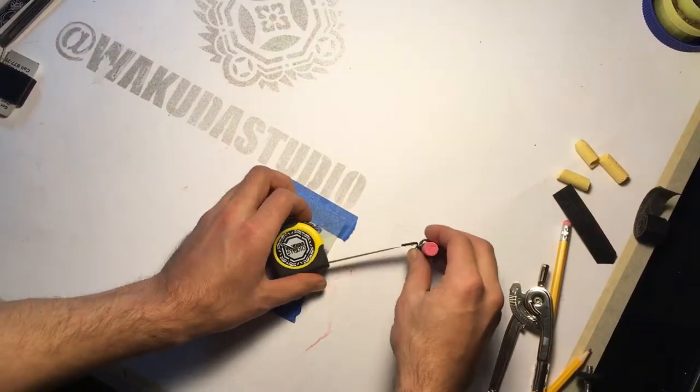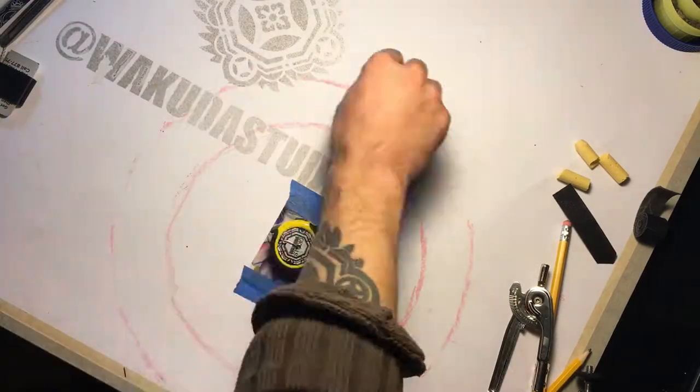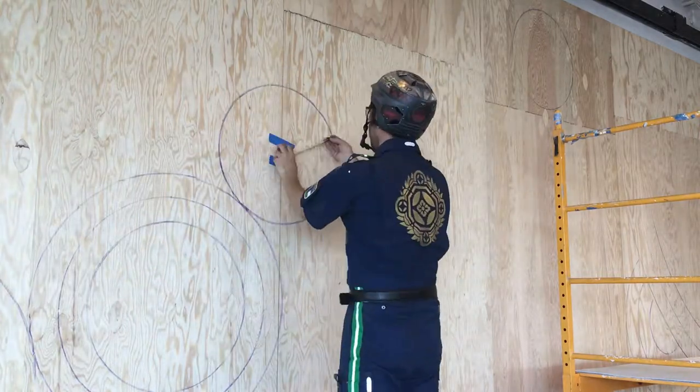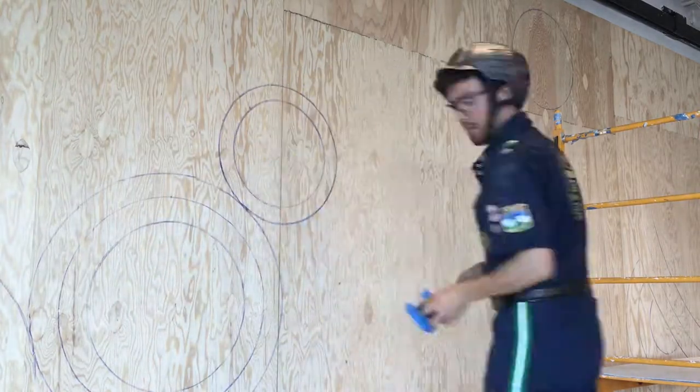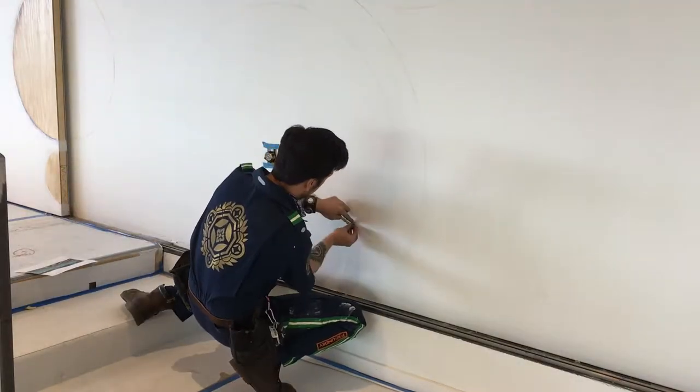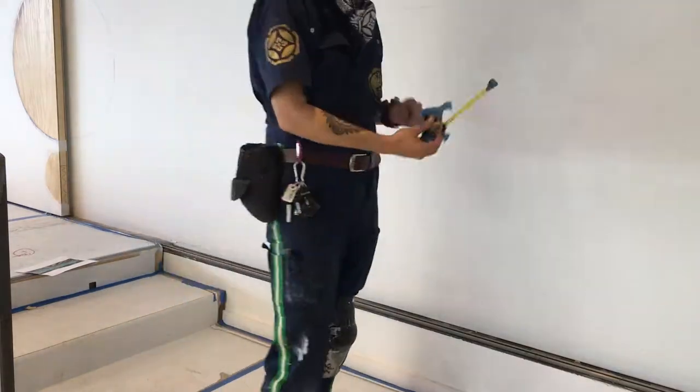The beautiful thing about this compass is unlike other techniques like a stick and string method, this has a locking tape measure element which means I can create concentric circles perfectly whenever I want up to a radius of six feet.